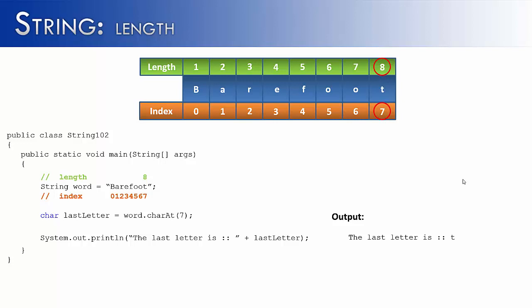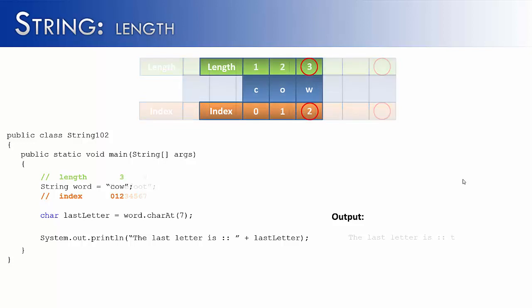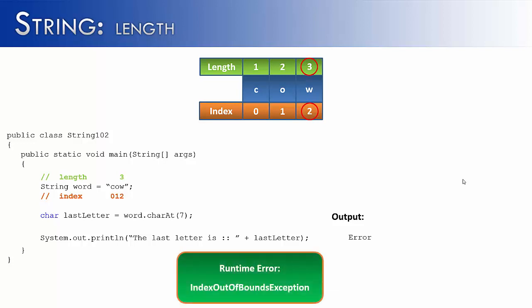But what if I didn't tell you what word I'm going to get or I used a different word? And so in this case, I've used the word cow. Would it work to still say word.char at seven? Well, no. It would give me an index out of bounds because cow doesn't have an index of seven. So I'm going to show you a way that you can use length to determine what the last letter is of any string, no matter what string you're giving it.